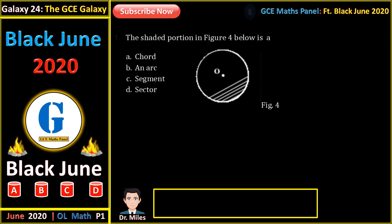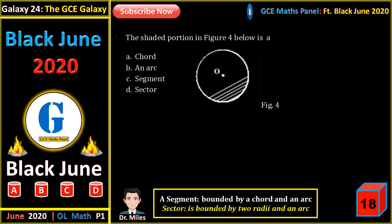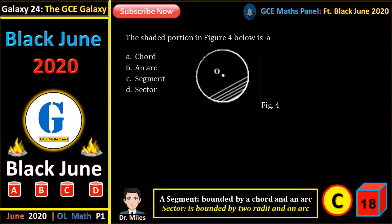The shaded portion represents a segment. A segment is bounded by a chord and an arc. A sector is bounded by two radii and an arc. Note: if a chord passes through the center of the circle, we have a semicircle, and in that case the segment and sector behave the same. However, this is not the case here. So the result here is C — it's a segment.